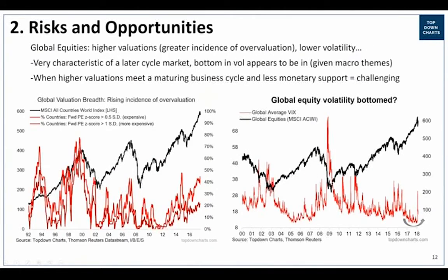Moving on to global equities at a global level - it's a pretty interesting stage of the cycle. If you think about the asset allocation clock and the business cycle, equities tend to do the best coming out of a recession into the recovery. After that, commodities tend to take over, and then going into a downturn, bonds tend to do well. At this point, I think equities have still got some room to run. Just like with the economic cycle, I'm not seeing any signs that the economic cycle is over yet, and the same thing for equities.